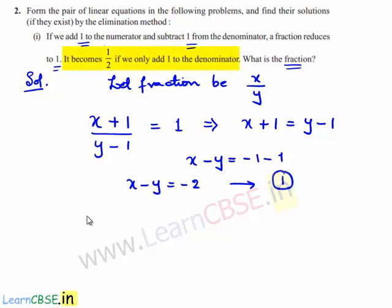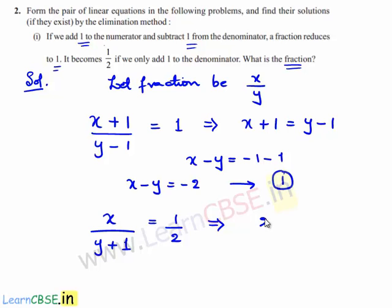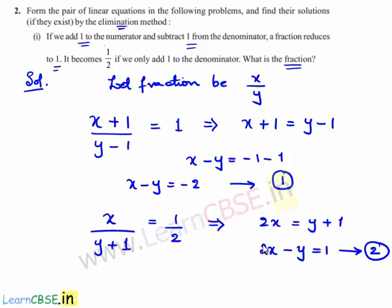By the second condition, it becomes 1 by 2 if we only add 1 to the denominator. The numerator remains x and the denominator becomes y plus 1, so x over y plus 1 equals 1 by 2. On cross multiplication: 2x equals y plus 1. Rearranging: 2x minus y equals 1. Name this equation number 2. We use the elimination method to find the solution for equations 1 and 2.